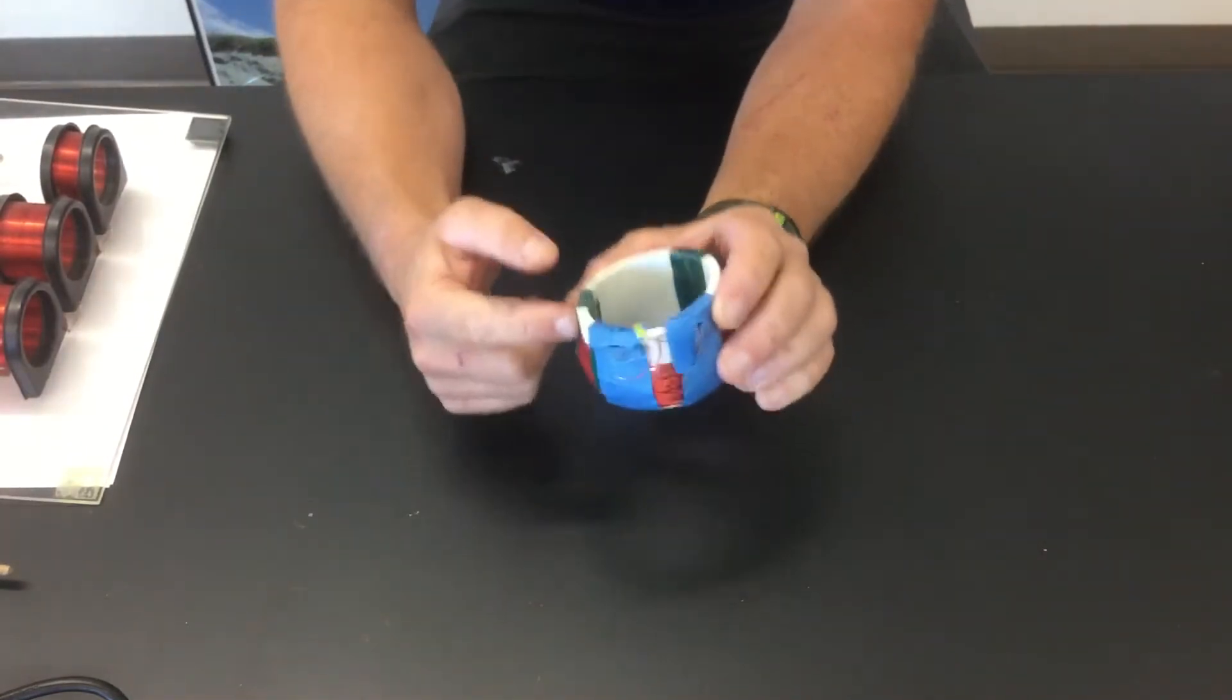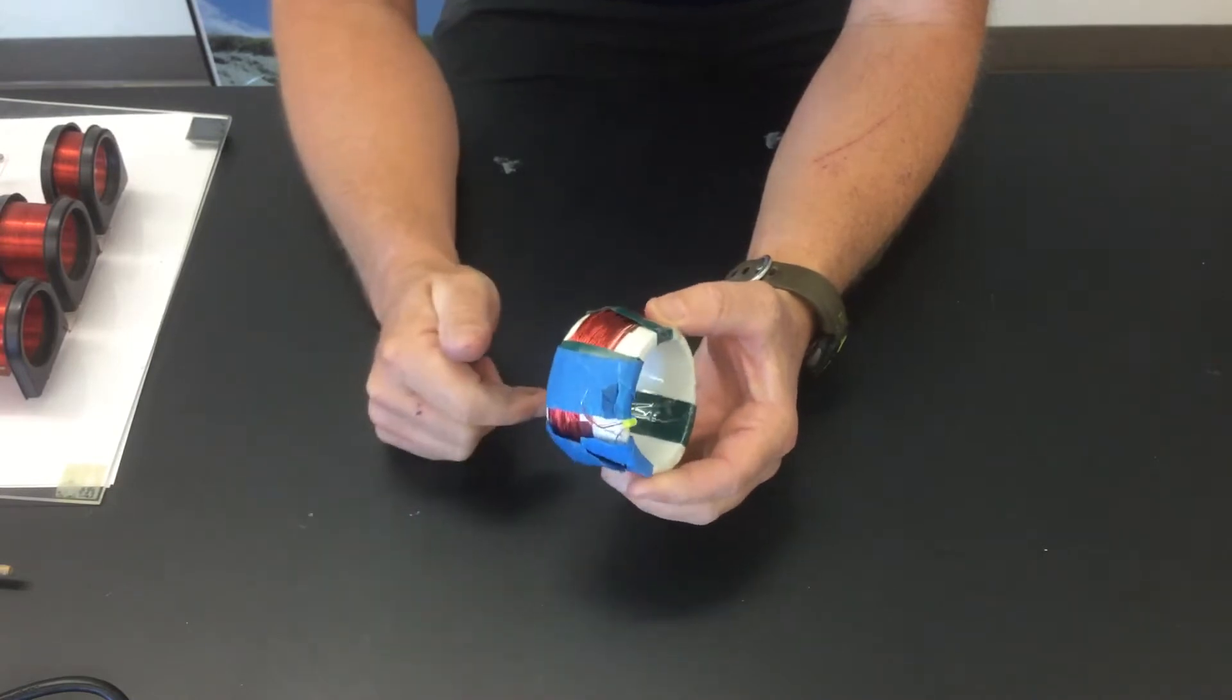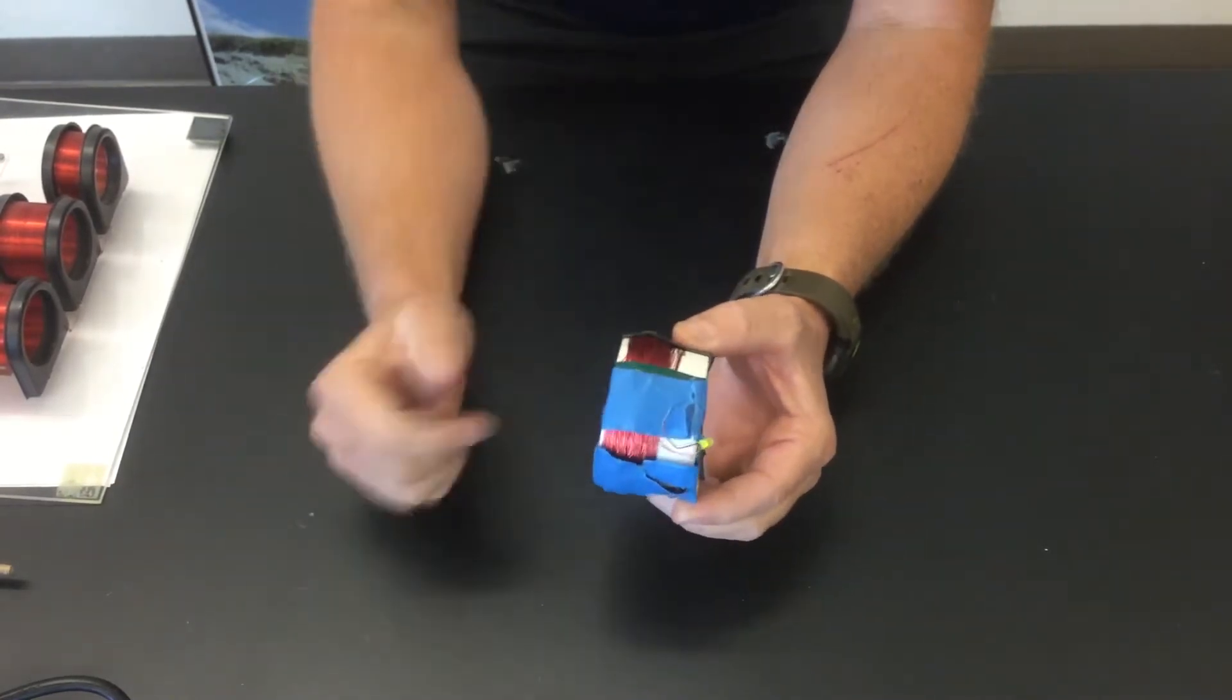So what you're looking at right here is a coil of wire with a bulb attached to it. It's called an LED, a light emitting diode. Coil of wire and a bulb.